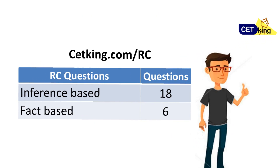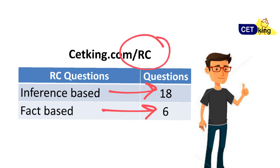From the RC section, I am expecting 24 questions — 18 based on inference-based RCs and 6 based on fact-based RCs. Please go to ctkin.com/rcs — I have uploaded links to New York Times and Guardian editorials, which are normally where they pick the RCs from. So the main source of RC is on that link. Please go through and solve a few of those editorials to get an idea of the kind of writing style used.